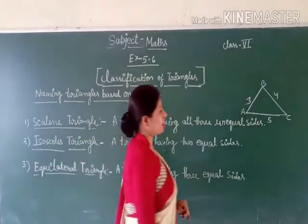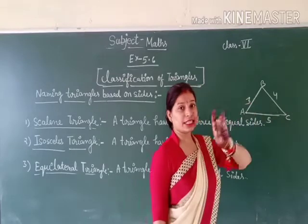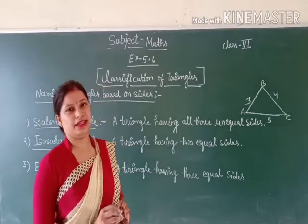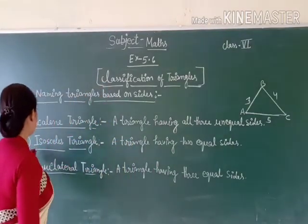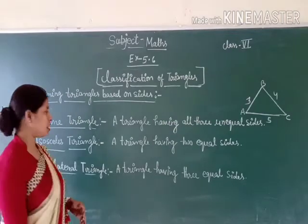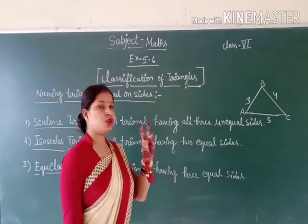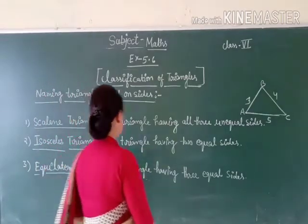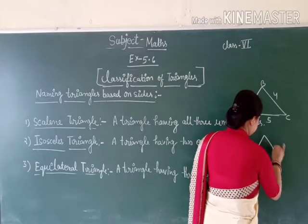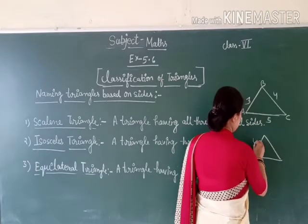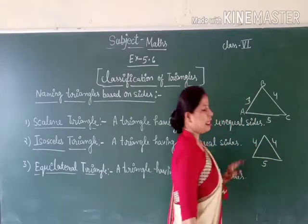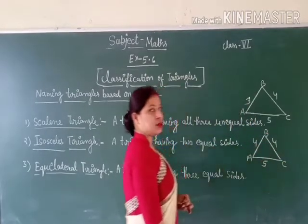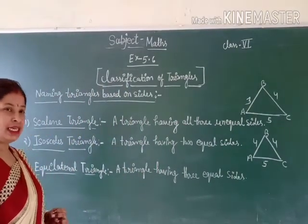A scalene triangle has all unequal sides. Now the second type is the isosceles triangle — a triangle with two equal sides. For example, a triangle with sides 4, 4, and 5 — two sides are equal — so this triangle is known as an isosceles triangle. Okay students?